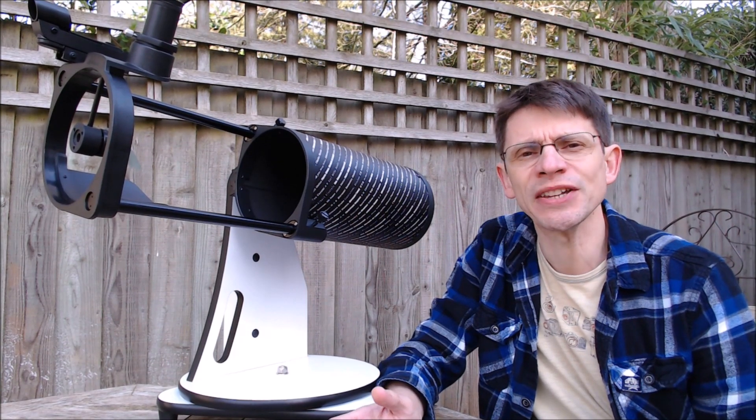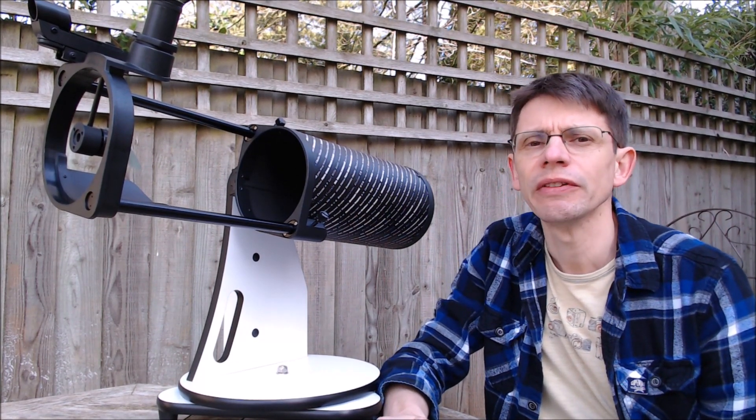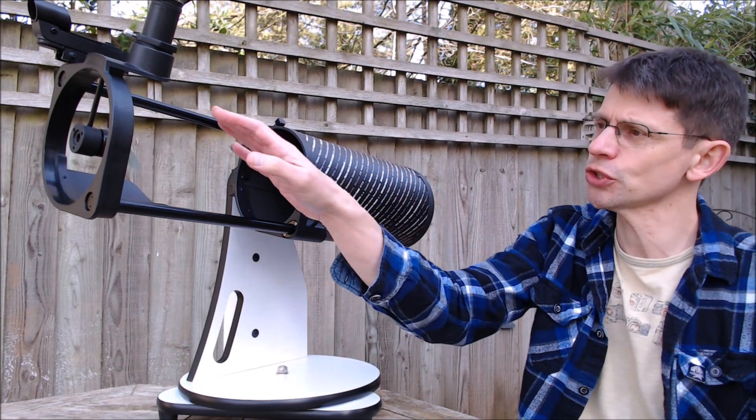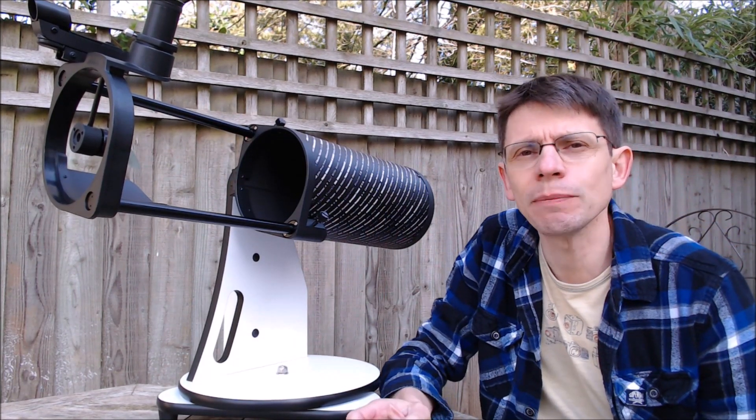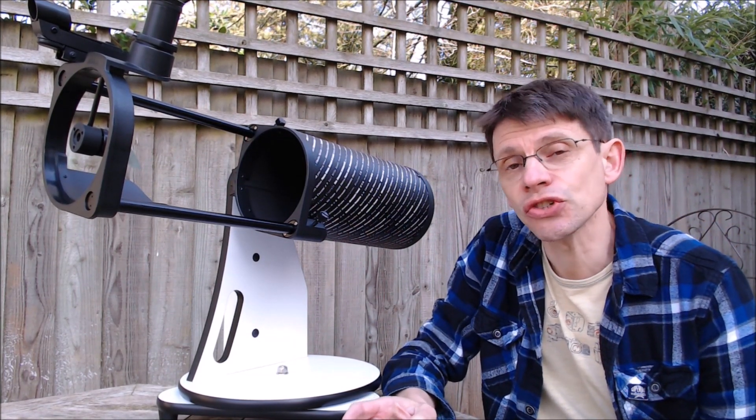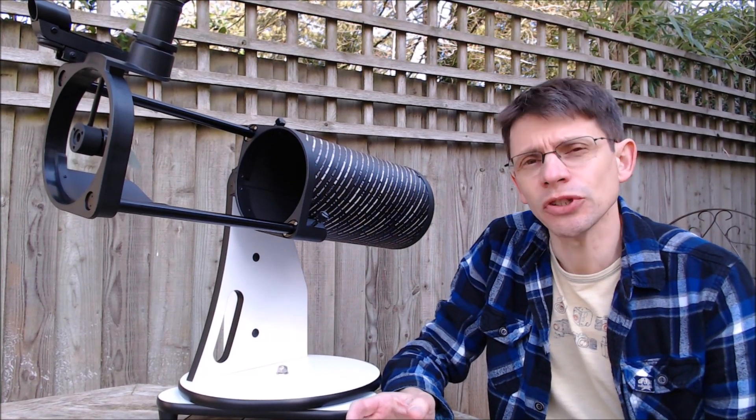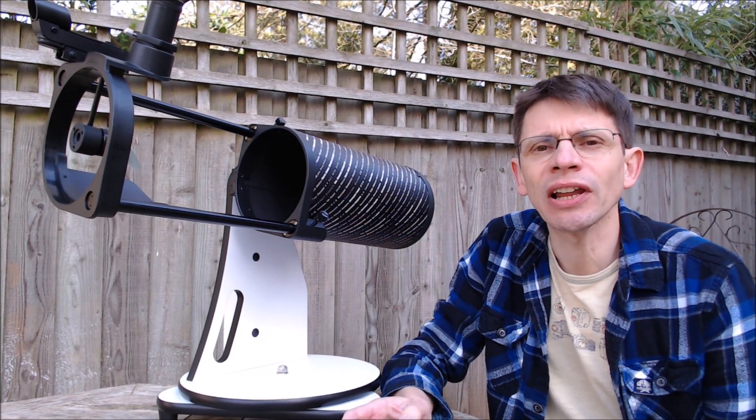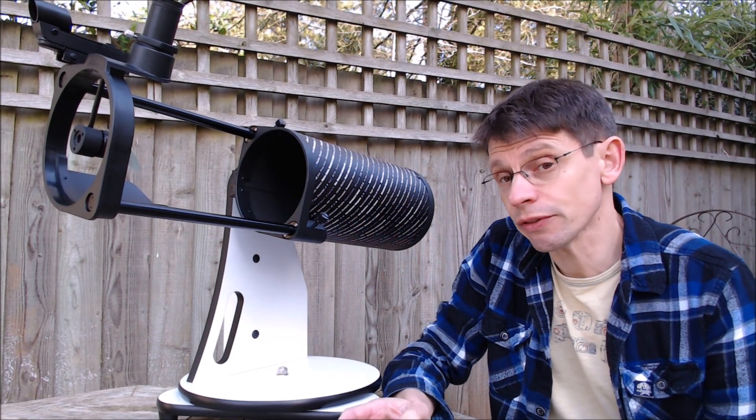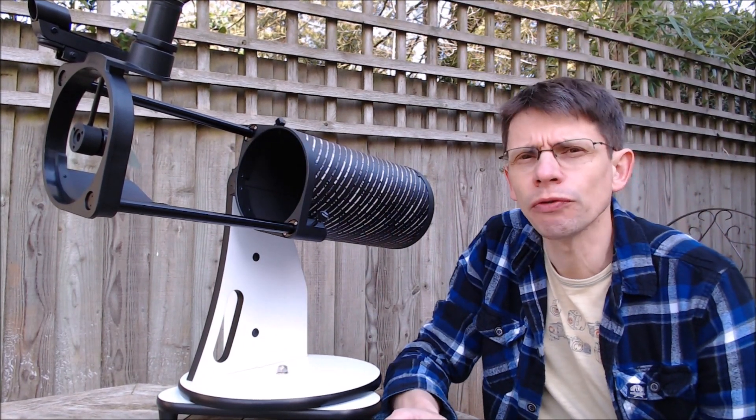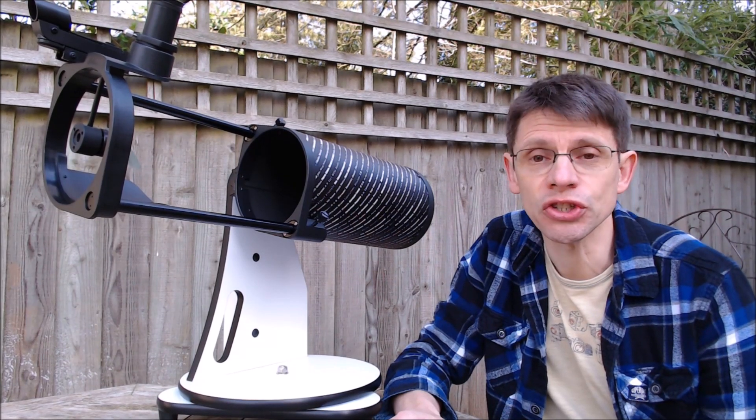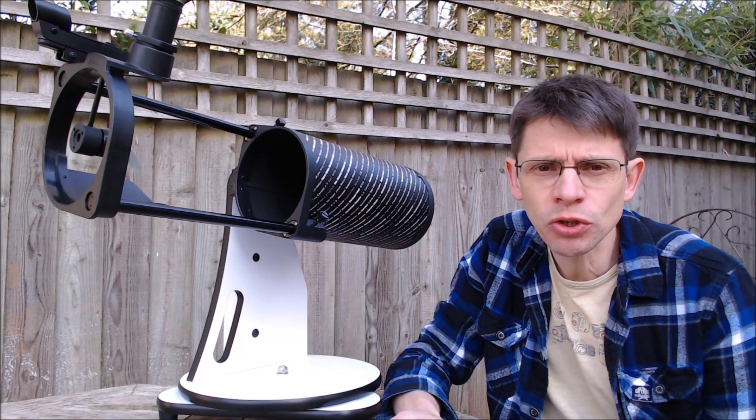So what could be better? Well, I've only got a couple of minor gripes. The open tube design of a FlexTube telescope like this can mean that stray light can disrupt your view. You should always position any scope away from distracting street lights, but stray light can still reach the mirrors through this gap.